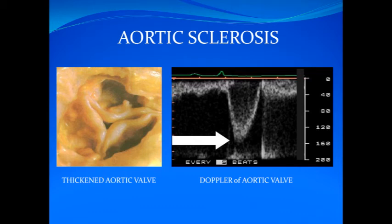Aortic valve sclerosis is usually diagnosed on two-dimensional echocardiography by focal areas of increased thickening and calcification of valve leaflets, with normal motion and a velocity less than 2.5 meters per second. According to the new valve disease guidelines, aortic valve sclerosis has a gradient of less than 25 millimeters of mercury and represents Stage A of aortic stenosis.